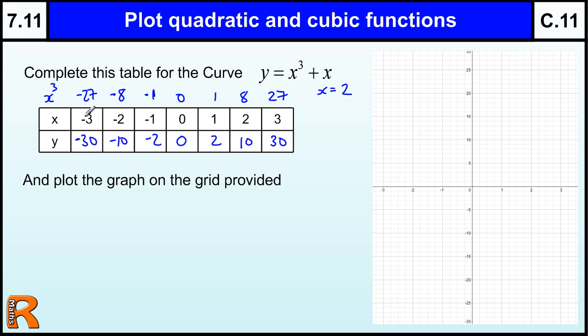So minus 3 is plotted at minus 30, so it's down here. Minus 2 is at minus 10. Minus 1 is at minus 2, which is about there. And then we've got 0, and then we've got the same things going up here in the positive direction, at 10 and then at 30.